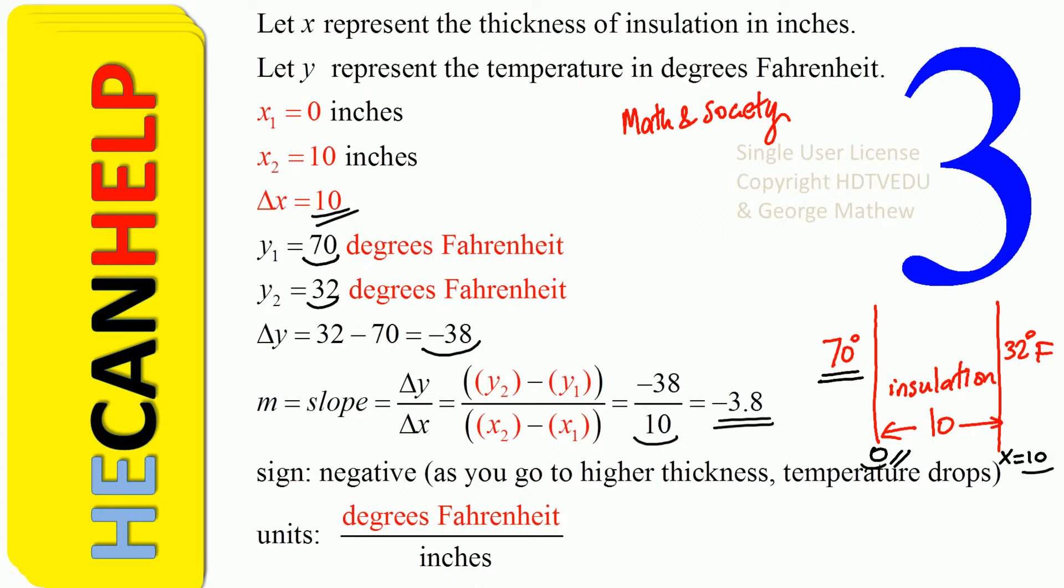In between, we have 10 inches of insulation. So what do you expect when you go from left to right? As you increase x by 1 inch, when you go 1 inch from the left, what happens?